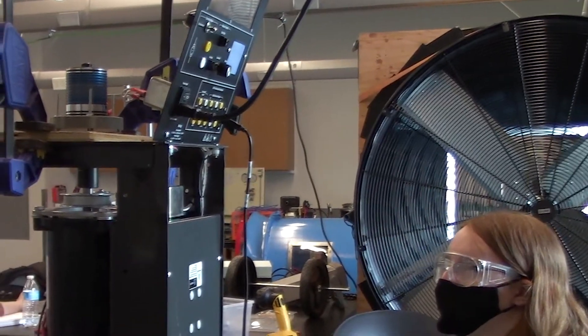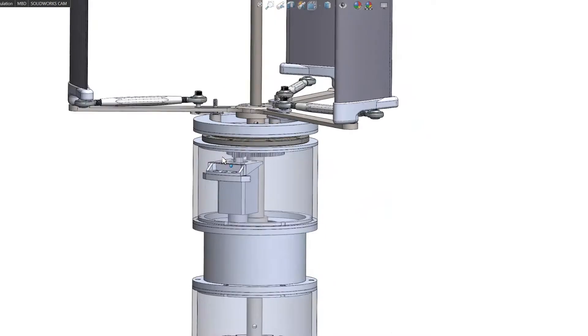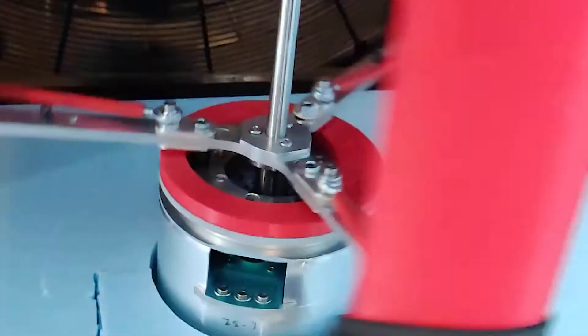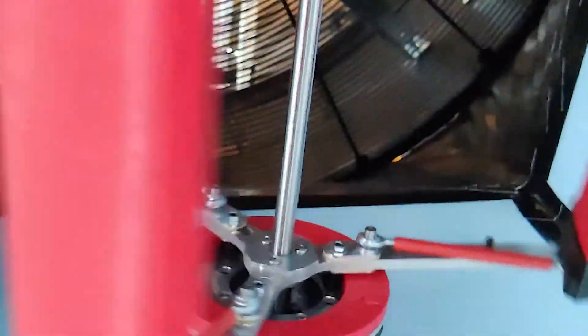Also attached to Arduino is our yaw system, and the yaw system is essentially related to making the turbine face forward. The wind comes from all sorts of directions. Our particular turbine has a front to it—most turbines do—they want to face into the wind.